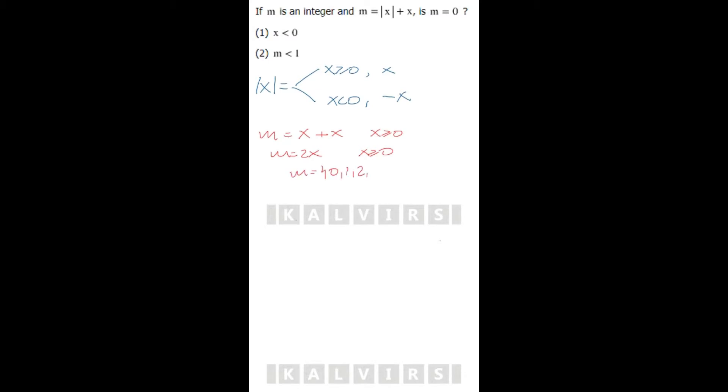The second option involves when the absolute value of x equals negative x. So m equals negative x plus x. This is when x is negative. In that particular case, m equals 0 only.